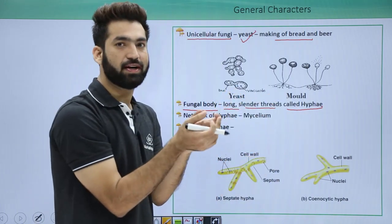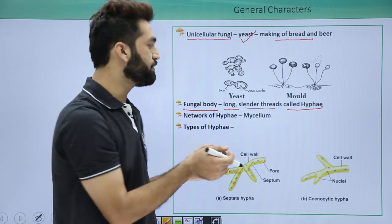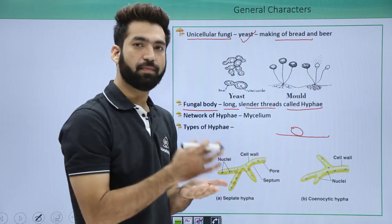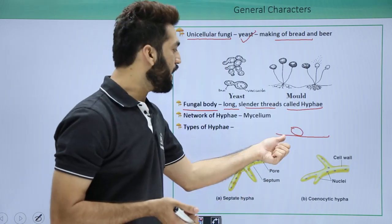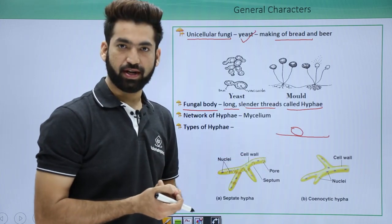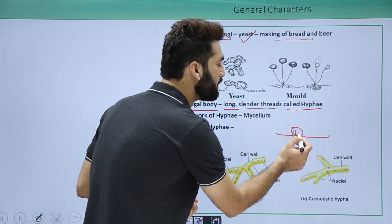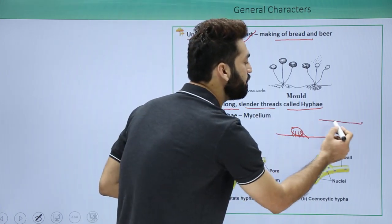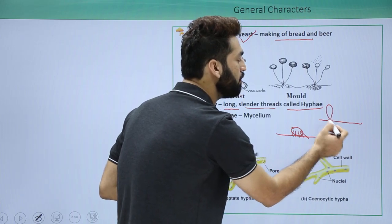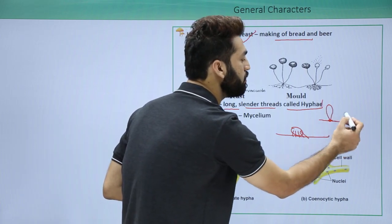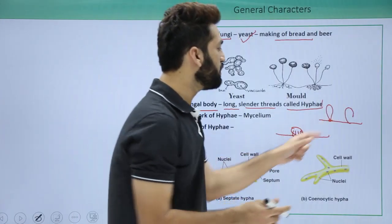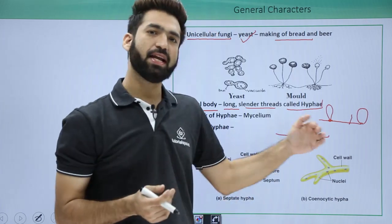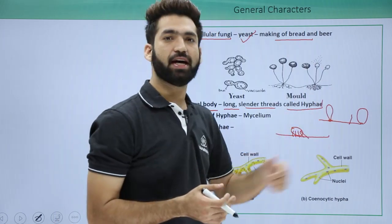Fungi always reproduce with the help of spores. When a spore falls on a particular place, it takes nutrients from that place, which is called the substratum. The fungus sucks up nutrients from the substratum and grows in the form of hyphae. Each spore germinates to form one hypha, and hyphae are unicellular structures.